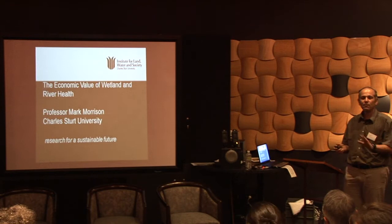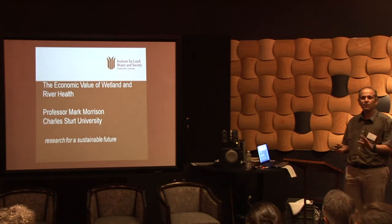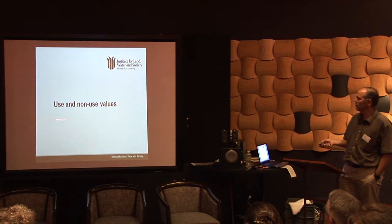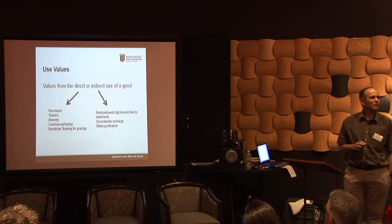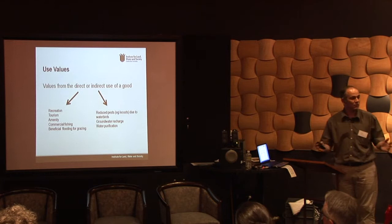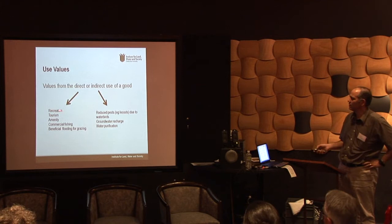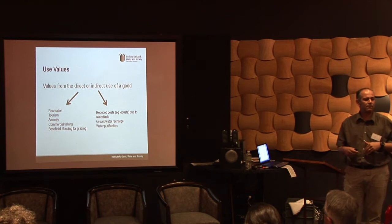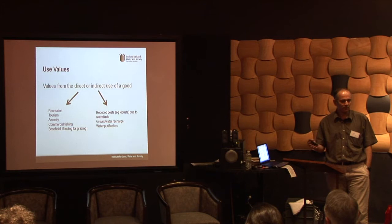It's not a basin I know a lot about. Most of my work has been in the Murray-Darling Basin, but we can learn a lot from the work done there about what's relevant here. First, let's talk about use and non-use values. There are two types of values for economists. The first is use values — the values from using a good, either directly or indirectly. Direct use includes recreation, tourism, amenity value, commercial fishing, and for many people in this room, beneficial flooding and grazing.